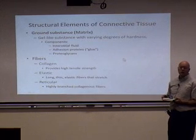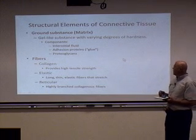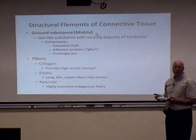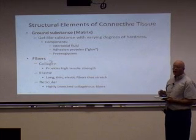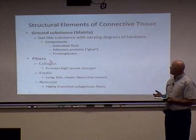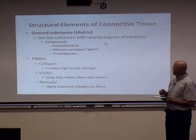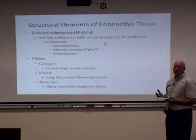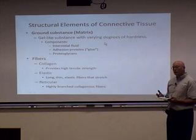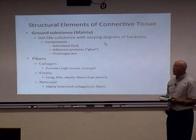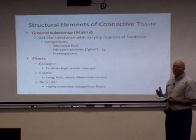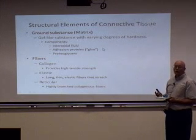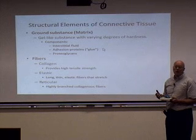Let's look at the overall structure of connective tissue. There are three key things that make it up: one is the ground substance or matrix, the extracellular matrix; two are the fibers; and three are the cells. The ground substance is a gel-like substance with varying degrees of hardness. For example, your connective tissue has much less hardness than bone, but both have this extracellular matrix containing interstitial fluid, proteins, and proteoglycans — protein-sugar compounds. In bone, you add hydroxyapatite, a calcium phosphate mineral.